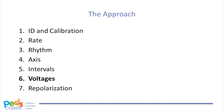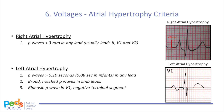Let's first discuss the criteria for atrial hypertrophy. Right atrial hypertrophy is characterized by tall P-waves, which are 3 millimeters or greater in any lead. It is most commonly seen as tall P-waves in leads 2, V1, and V2. The P-wave represents atrial depolarization, so if we think about an impulse traveling from the SA node through the right atrium to the AV node, it makes sense that an enlarged right atrium would result in a taller P-wave.